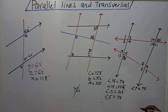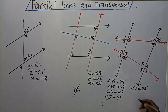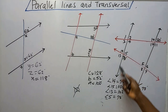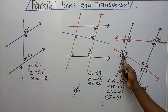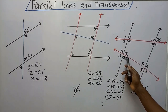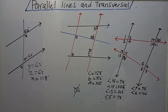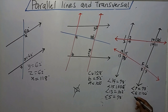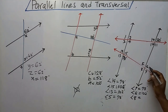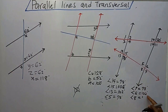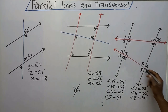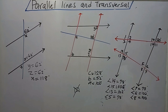I want to get angle 6. These lines are parallel and this is a transversal. At the bottom of this line I have angle 15, and at the bottom of the other line I have angle 6, so 6 and 15 are corresponding angles — they are in the same position. So angle 6 is 102 degrees. Now for angle 8: since these are intersecting lines, 8 and 6 are vertically opposite, so angle 8 is also 102 degrees.